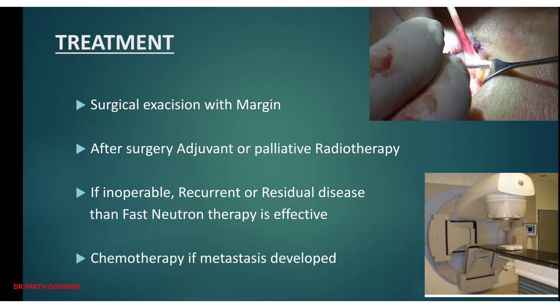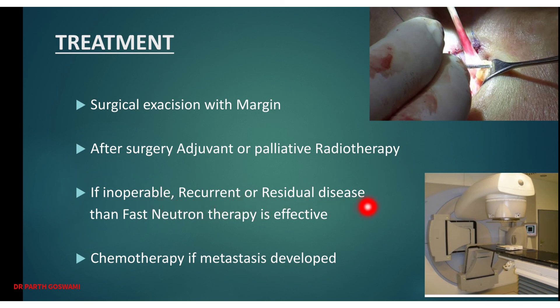The main treatment for adenoid cystic carcinoma is surgical excision with adequate margin removal. Adjuvant or palliative radiotherapy may be given after surgery. For inoperable, recurrent, or residual disease, fast neutron therapy is very effective and is the latest treatment modality. For widespread metastasis, chemotherapy is the remaining treatment option.